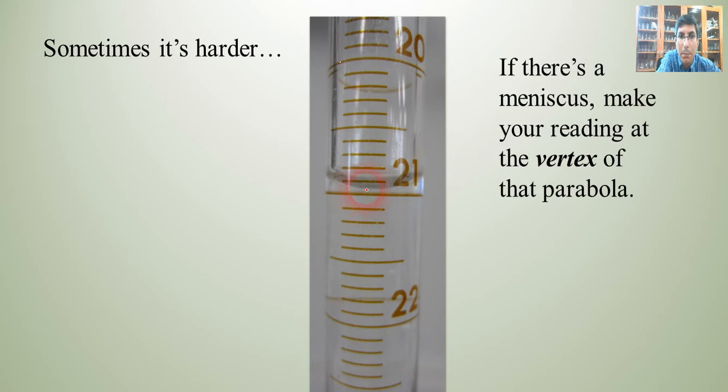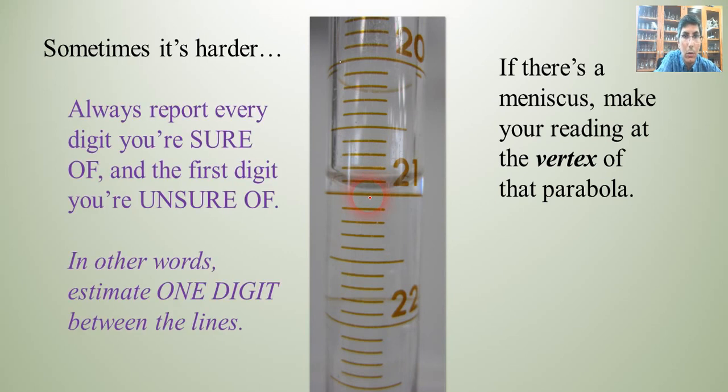That means, in this case, it's the bottom of that, and so if you can look at that, what you want to do is report every digit that you're sure of and the first digit that you're unsure of. So, what that means is you need to read between the lines. You need to estimate one digit between those lines.